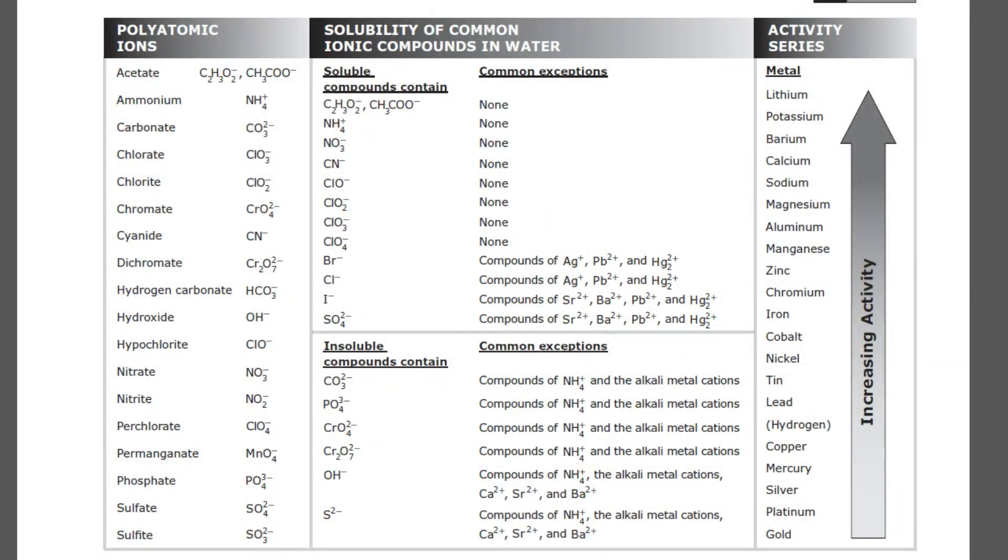Alright. So what we're looking at here is the solubility chart as provided by the state of Texas. And let me show you how to read it. The compounds are typically organized by the negative ion in the compound. And then those on the top half here are usually soluble except when they're bonded to these.